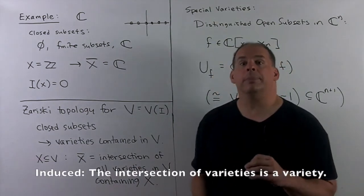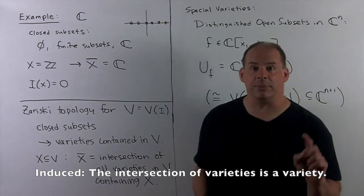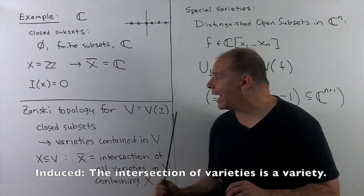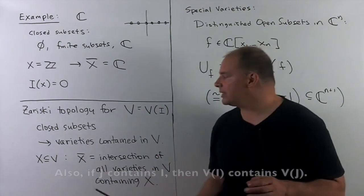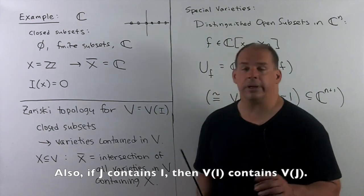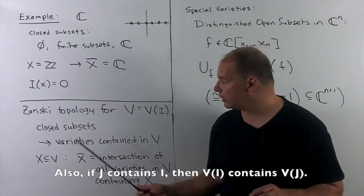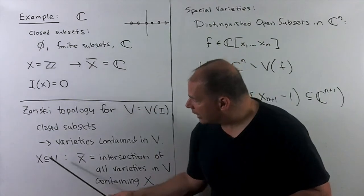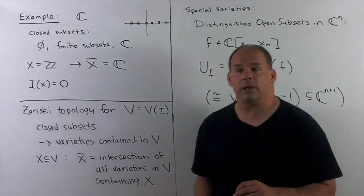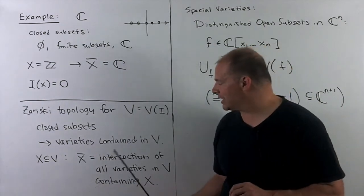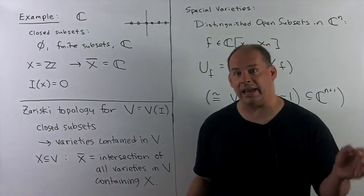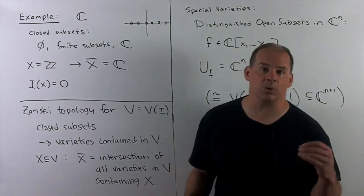Now, we want to put topologies on the varieties themselves. So if we want the Zariski topology on varieties, say V sub i, then the closed subsets are just going to be the varieties that are contained in V itself. So we're just taking the induced topology. Now, if I have some subset X in our variety, the Zariski closure is going to be exactly the same. We're just going to take the intersection of all varieties in V that contain X. So more or less the same as what we did before.